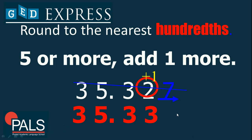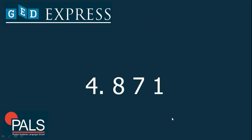Unlike with whole numbers, we are not putting zeros here. We just remove the remaining digits and let the numbers in the hundredths place stay. So the rounding of 35.327 becomes 35.33.